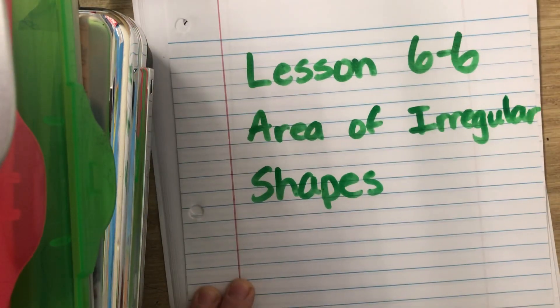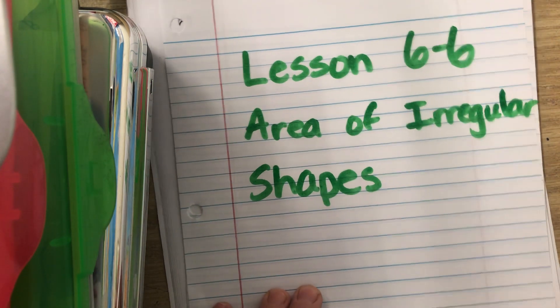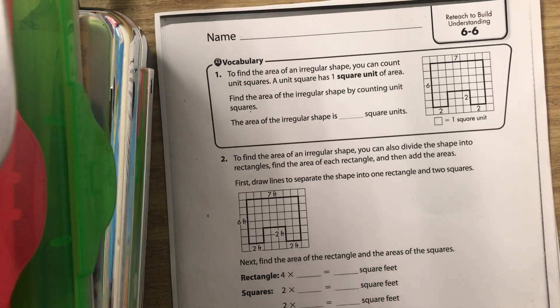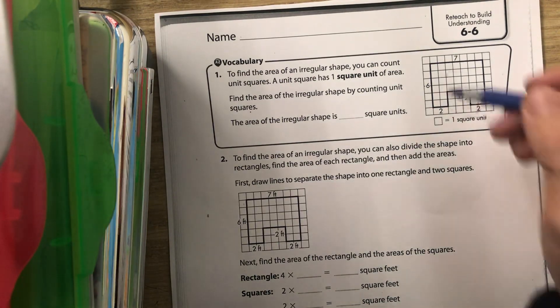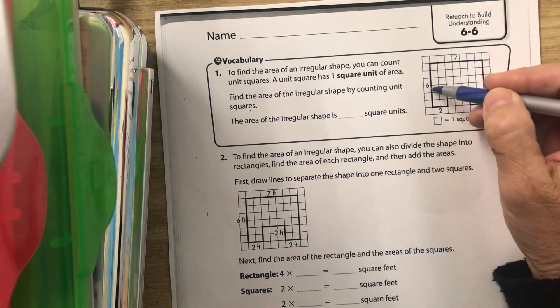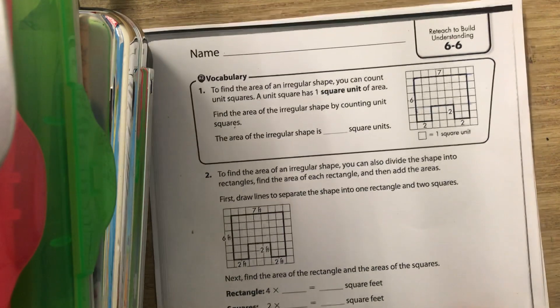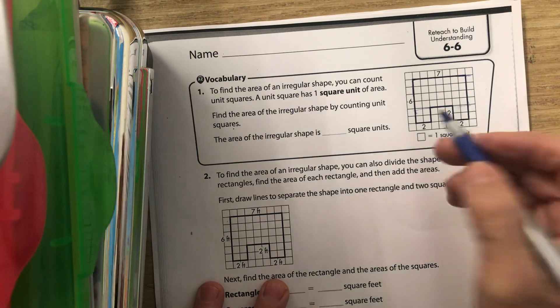Okay, lesson 6-6: finding the area of irregular shapes. We have found the area of regular shapes like squares and rectangles by multiplying the top by the side. Today we want to look at how to find the area of a shape that's not a perfect square or rectangle. What we're going to do is make them into perfect squares or perfect rectangles.